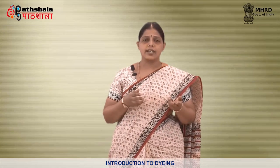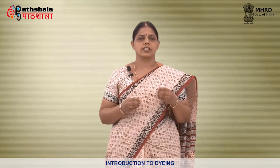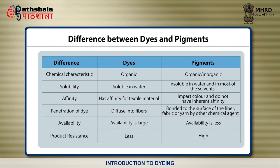Now let's see the differences between pigment and dyes. The terms dye and pigment are sometimes used interchangeably. Both dyes and pigments are powerful colorants. The basic difference between them is that dye gets dissolved in the substrate while pigments tend to leave residues. Based on chemical characteristic, dyes are organic whereas pigments are organic as well as inorganic. Based on solubility, dyes are soluble in water whereas pigments are insoluble in water as well as in most solvents.